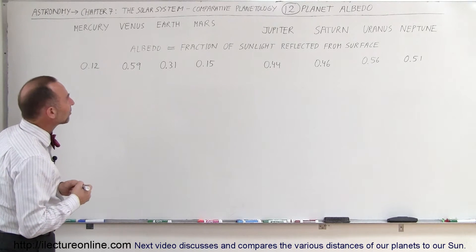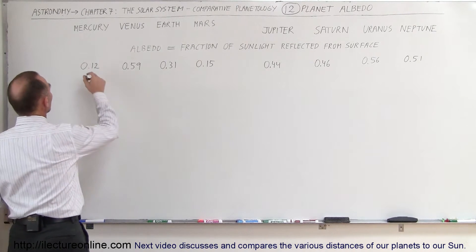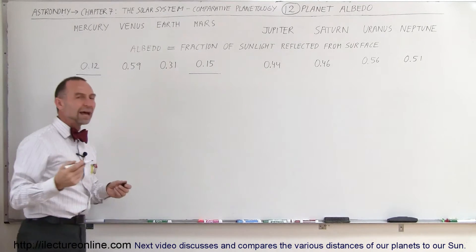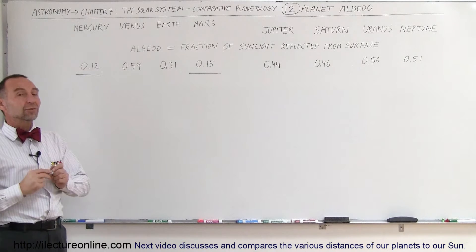And what you see right away is that two of the eight planets have a relatively low number, that is Mercury and Mars. So what do they have in common relative to the other six planets?